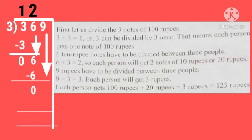9 rupees have to be divided between 3 people. 9 divided by 3 is equal to 3. 3 threes are 9. So, 3 you are going to write up. 9 minus 9, 0. Each person will get 3 rupees. Each person gets 100 rupees plus 20 rupees plus 3 rupees is equal to 123 rupees. Got all of you? Now, we will see the next sum.